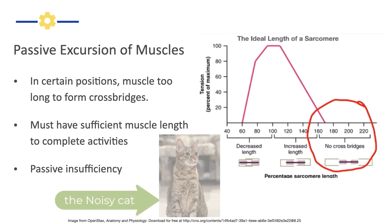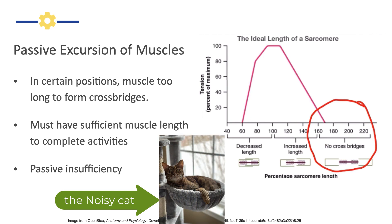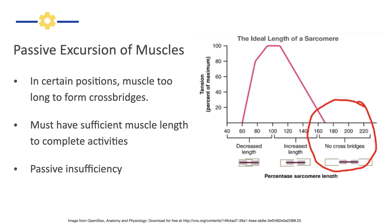I have a cat, and she hates when I make these presentations because I could spend my time much better petting her. But she's yelling at me currently; I think she'll calm down. So passive insufficiency is when a muscle is too long to form these cross bridges effectively, and we see a dramatic decrease in strength. When a muscle is at a very lengthened position, we see a decrease in its ability to generate force.